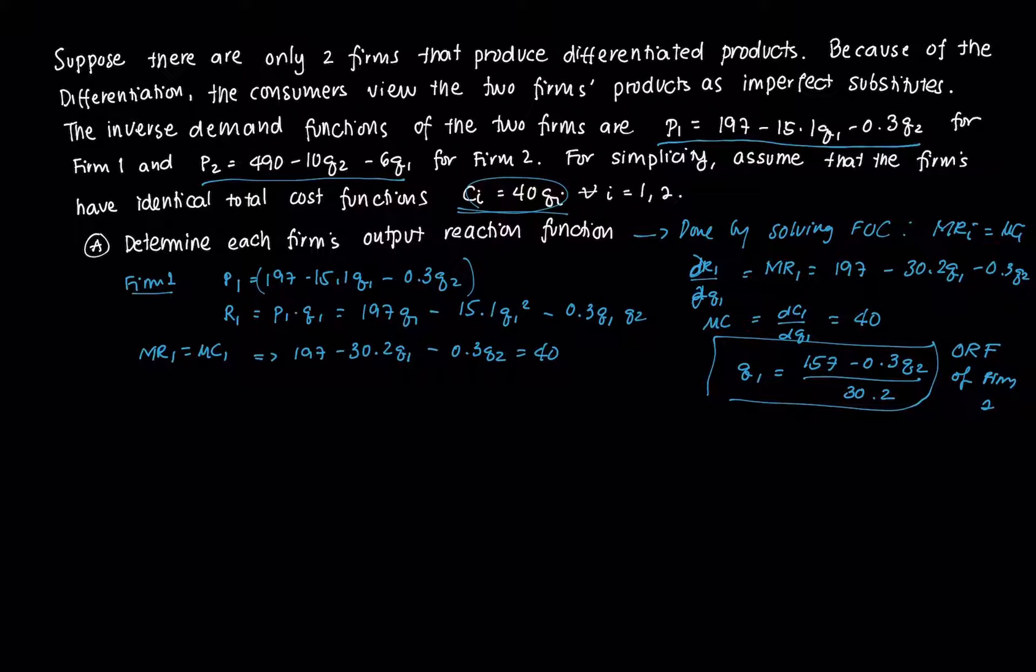We do essentially the same procedure for firm 2. P2 equals 490 minus 10Q2 minus 6Q1. We multiply by Q2 and get R2, which is P2 times Q2. So we get 490Q2 minus 10Q2² minus 6Q2Q1.